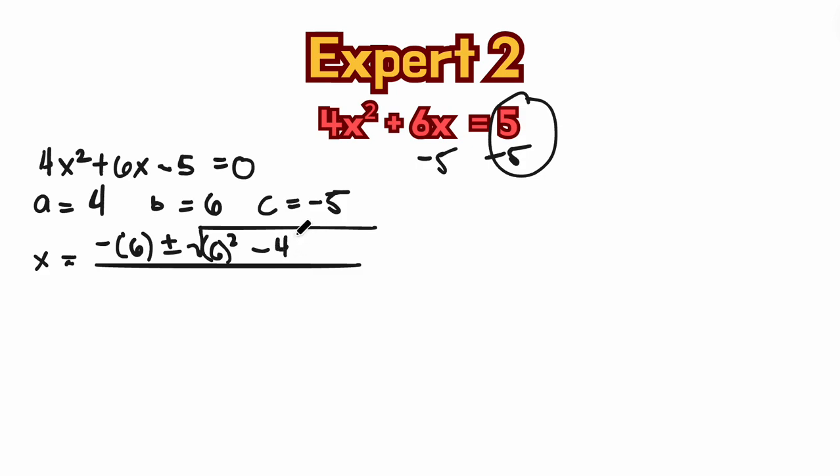Minus 4 times 4, which is a, times c, which is negative 5. All over 2 times a, which is 4.